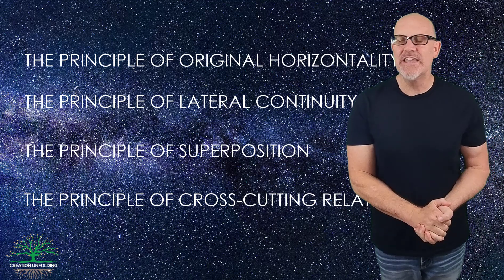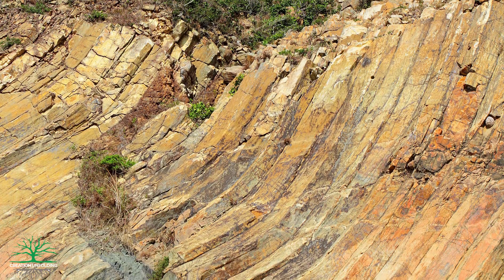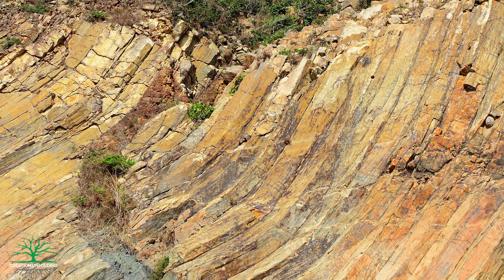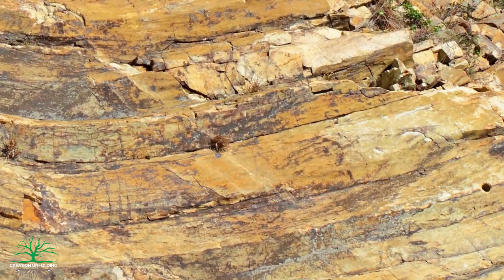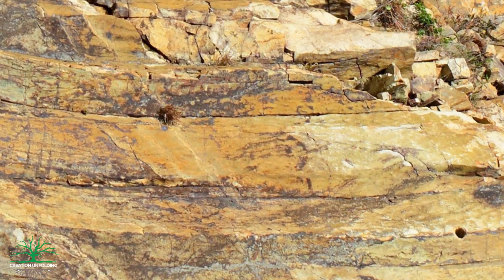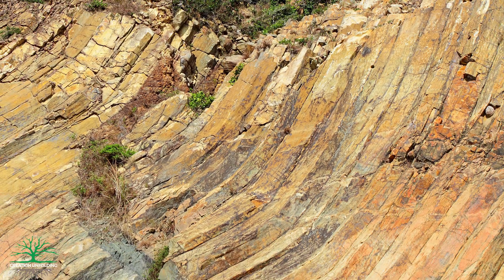Let's dig in and take a look at the principle of original horizontality first. Have you ever looked at a road cut and seen tilted or bent layers of rock? The principle of original horizontality states that all rock layers were originally horizontal with respect to the Earth's surface when they were laid down, and were only later bent or tilted. There are some exceptions to this principle, but generally this principle works for most of the Earth's rock layers.